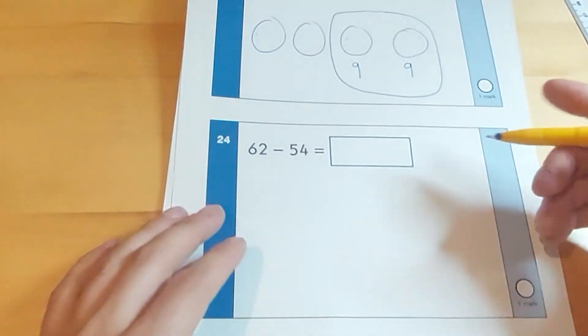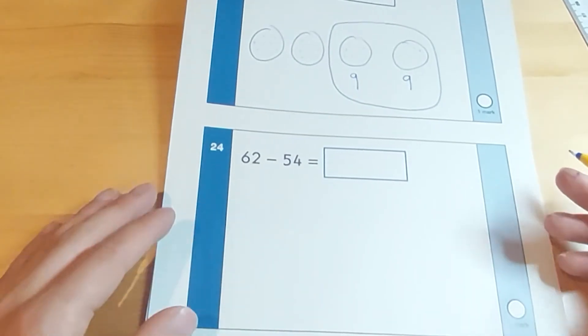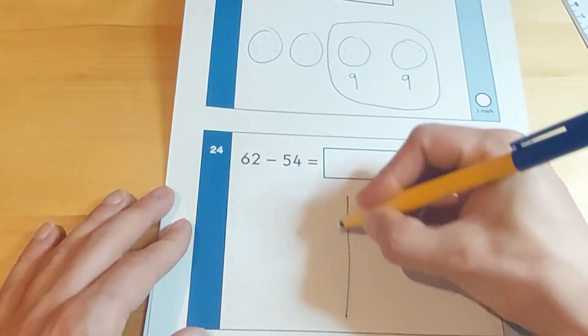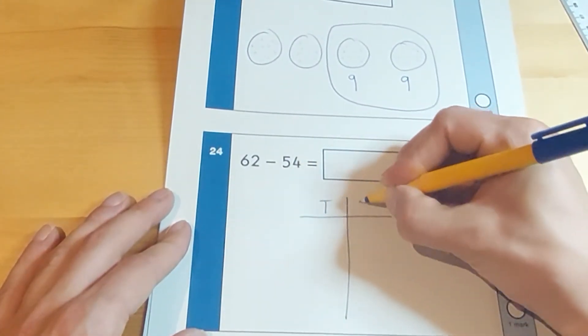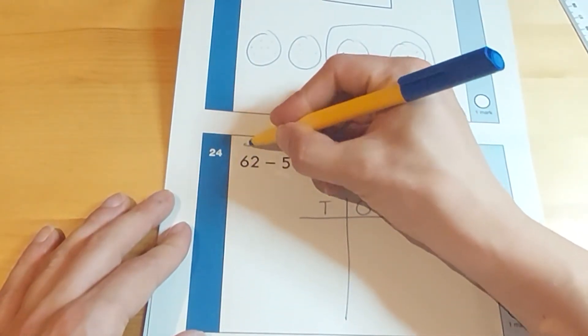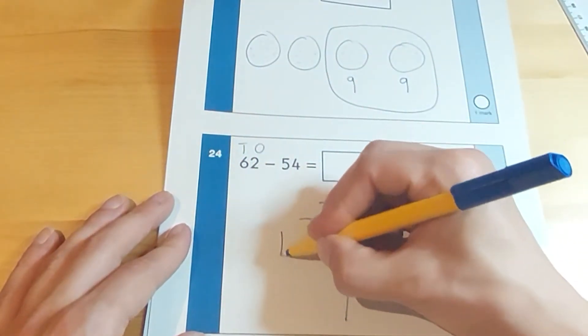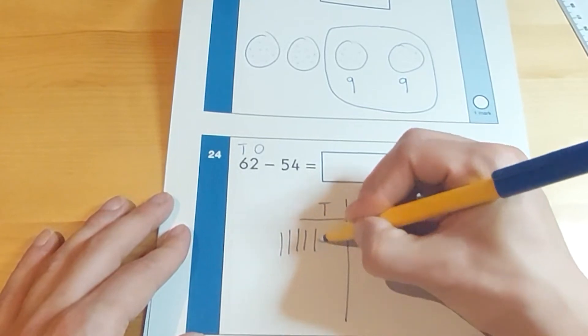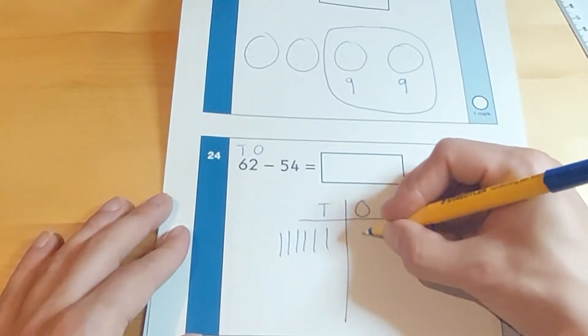Final subtraction question. Again, in this question, the children would need to be able to borrow. So we're going to draw the tens and ones grid. We're going to make the biggest number 62 first. Tens and ones. 6 tens: 10, 20, 30, 40, 50, 60. 2 ones.